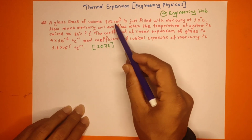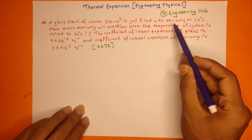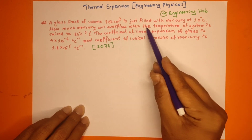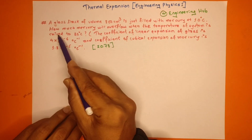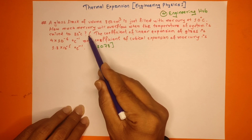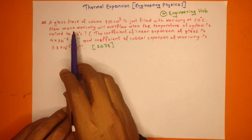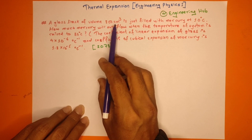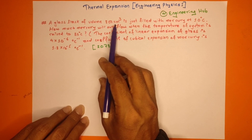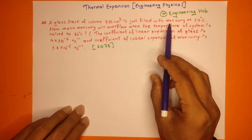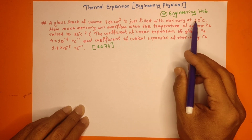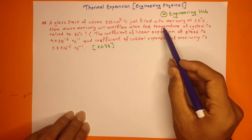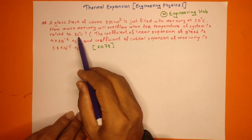A glass flask is just filled with mercury at 10 degrees Celsius. How much mercury will overflow when the temperature of the system is raised to 80 degrees Celsius? The volume of the glass flask is 800 cm³. The initial temperature is 10 degrees Celsius and the final temperature is 80 degrees Celsius.